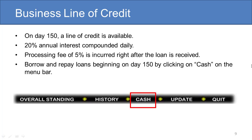Once the market has matured on day 150, a bank is extending a line of credit to Littlefield Technologies at 20% annual interest compounded daily. In addition, a processing fee of 5% is incurred right after the loan is received. You can borrow and repay loans beginning on day 150 by clicking on Cash on the menu bar below the factory schematic, and then clicking on the appropriate button on the bottom of the resulting window.